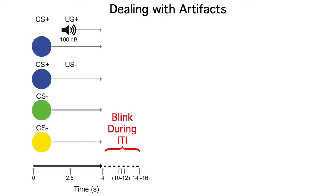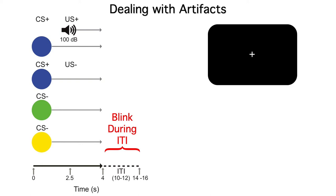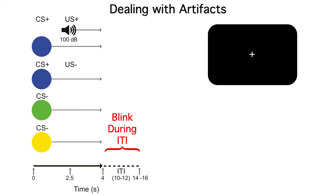ERP researchers have three main methods to deal with artifacts. First we can try to minimize the occurrence of the artifacts. For example, we might tell our subjects to blink only at certain times, like the intertrial interval or ITI. Or we might tell them to maintain their gaze on a central fixation point and then use an eye tracker to make sure they don't move their eyes.